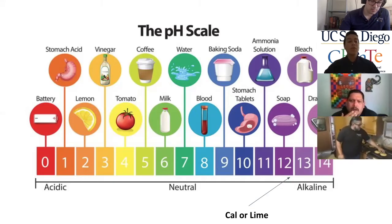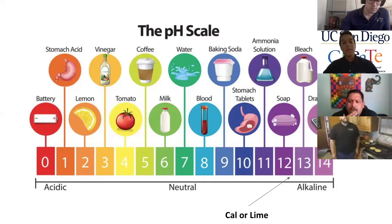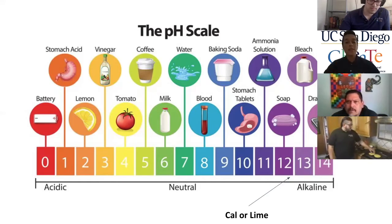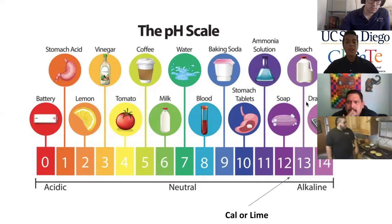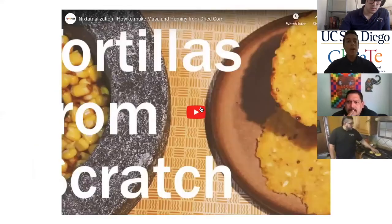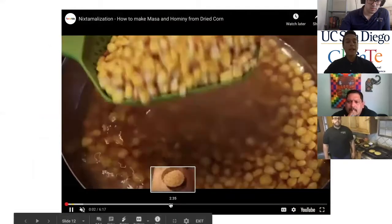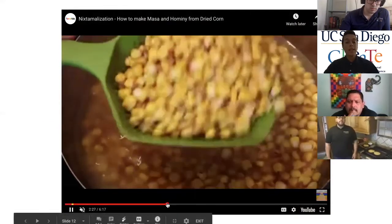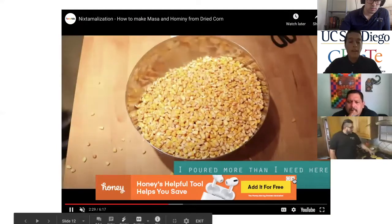Something that is going to be very key to our concepts here in the chemistry part is a solution we call 'cal' in Spanish, or lime in English. This alkaline solution is going to help us create the right concentration of the masa in order to get the product we want. We're going to watch a short video showing how the preparation of this alkaline solution works to create the masa.